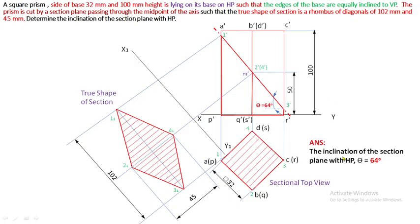This is entirely a different problem. They have given us what is the true shape exactly. Based on the true shape of section, we completed the section plane. After completing the section plane, you can identify the inclination. Make sure that major diagonal has 102 mm and 45 mm as minor diagonal of rhombus. If we obtain this, our answer is correct.